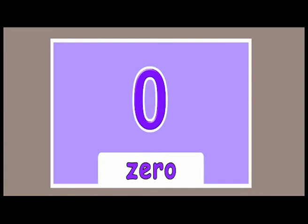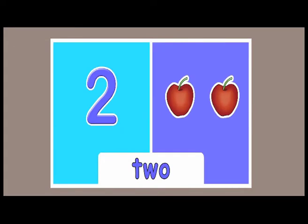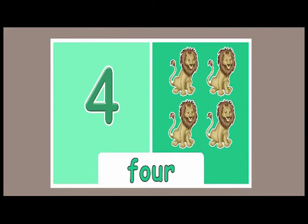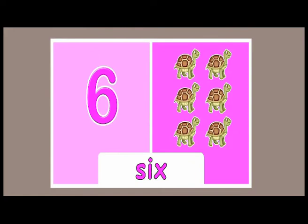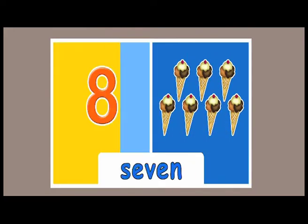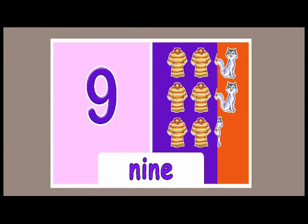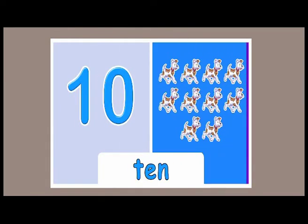For example: zero — zero means nothing, or zero means empty. One, two, three, four, five, six, seven, eight, nine, ten. Shall we look at the numbers once more?